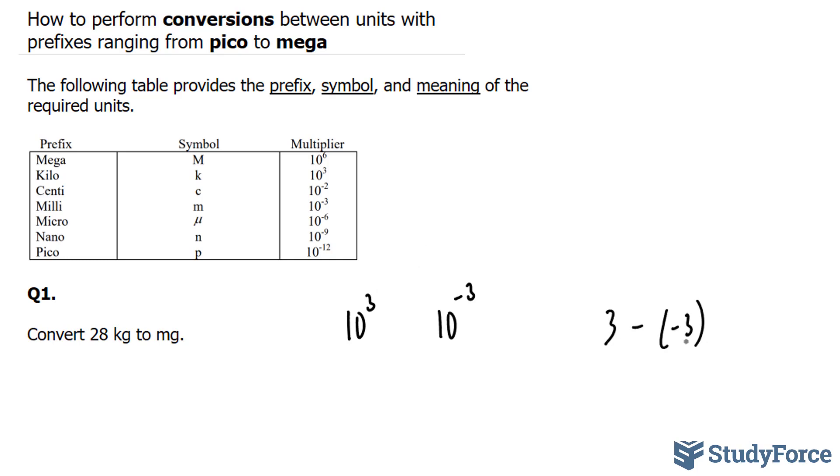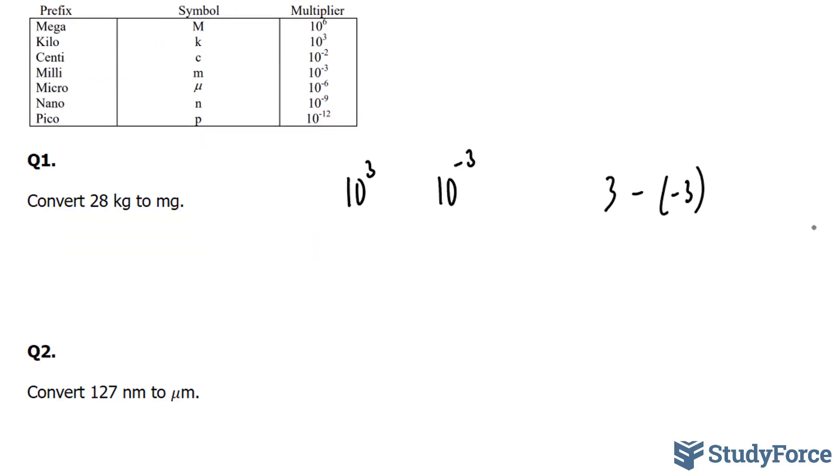And it's very important to realize that it's always the exponent of the unit that you have minus the one that you're going to get. So we have 3 minus negative 3, and that gives us positive 6. And what this positive 6 tells us is that our number 28, which has a decimal place after the 8, that decimal place will move to the right 6 times.